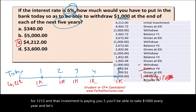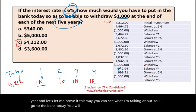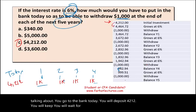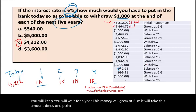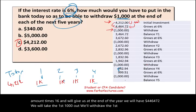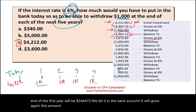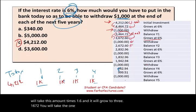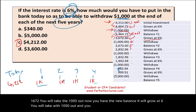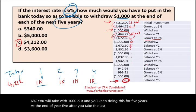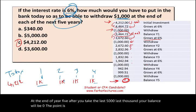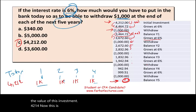Let me prove the math. You deposit $4,212 today. After one year it grows at 6%: 4,212 times 1.06 gives $4,464.72. Withdraw the first $1,000 — balance is $3,464.72. Let it grow again at 6%: it becomes $3,672. Withdraw $1,000. The balance keeps growing at 6% and you withdraw $1,000 each year for five years. At the end of year five, after you take the last $1,000, your balance will be zero. The math proves it works — $4,212 is the present value of this investment.